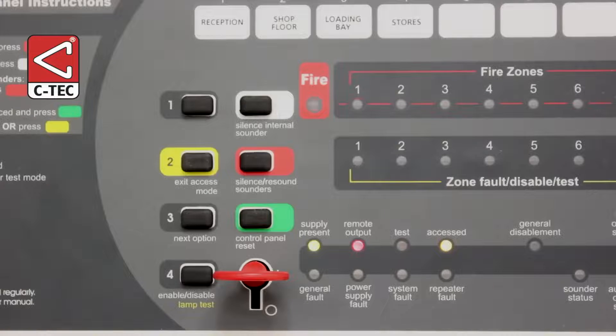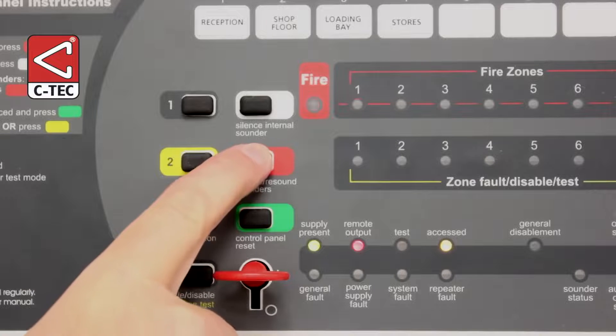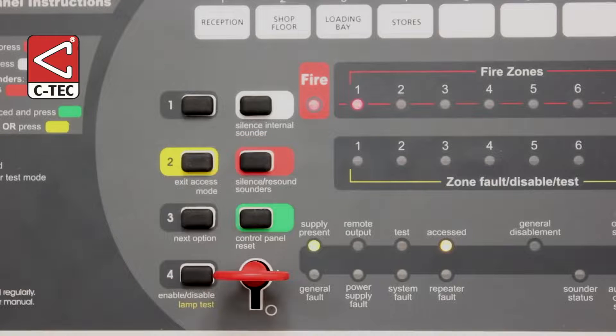Next, press the silence/resound sounders button. The alarm sounders and panel's internal beeper will stop sounding, and its red general fire and relevant zonal indicators will be lit steady.